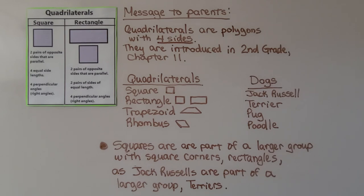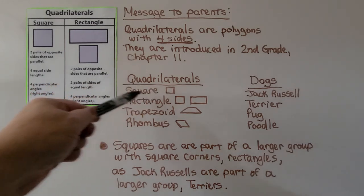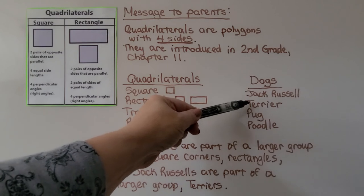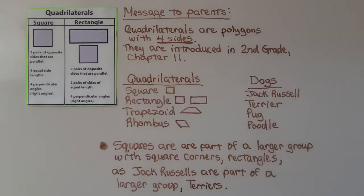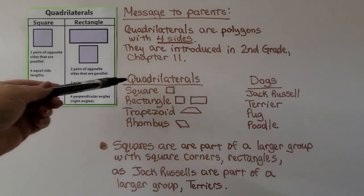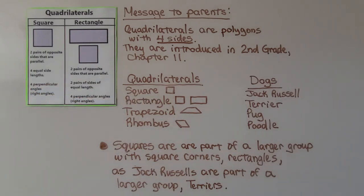Here's a quick message to parents: quadrilaterals are polygons with four sides and they're introduced in second grade, chapter 11. Squares are part of a larger group with square corners — rectangles — just as Jack Russells are part of a larger group, terriers. There are wire fox terriers, rat terriers, Scottish terriers — all kinds of terriers — and Jack Russells are just a small part. Squares are just a small part of the group of rectangles. To be a rectangle it needs four square corners, and because it has four square corners it will have four straight sides, but the main important thing is the four square corners.